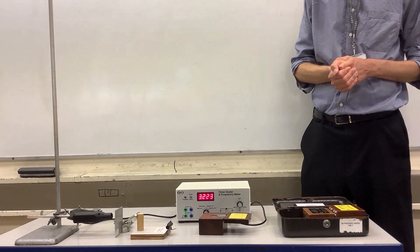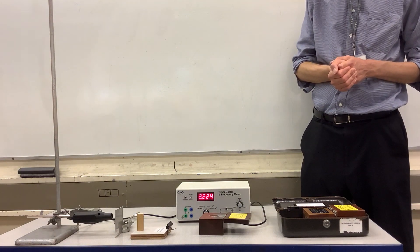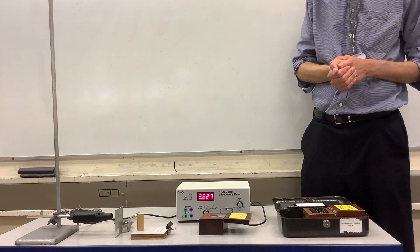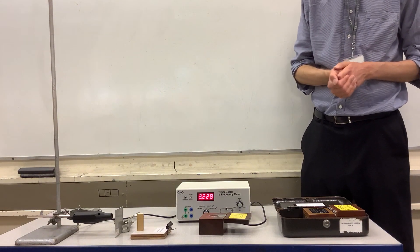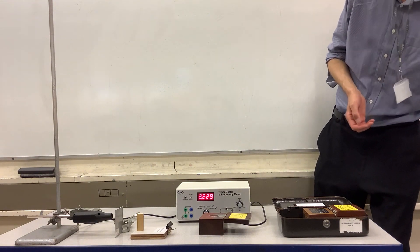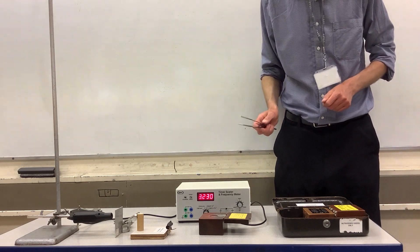So we would say that beta radiation has a medium penetrating power. It's stopped by a few millimeters of aluminum, or by meters of air. So now I can put away my strontium-90, and we can move on to the final kind of radiation.